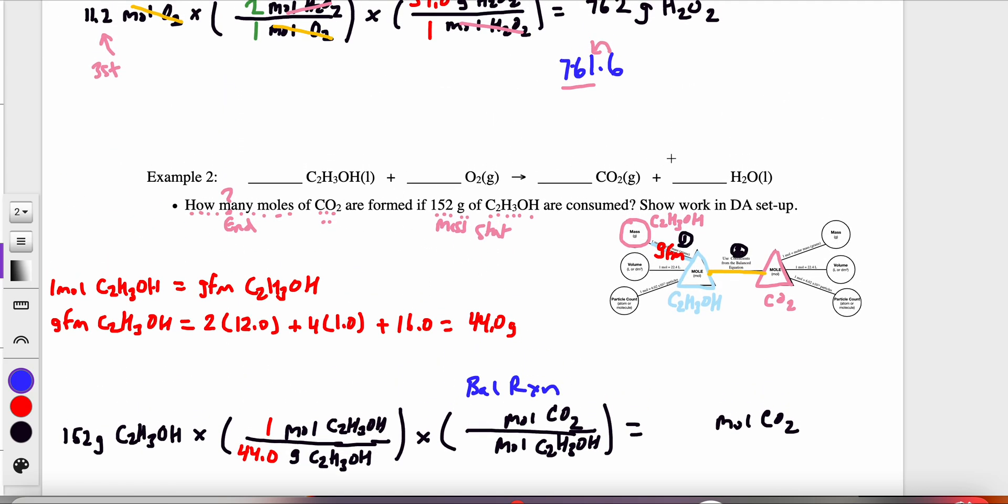And so when you go to balance this reaction, this one is a little bit tricky. It might take you some time, but the C2H3OH needs a coefficient of 2, which makes my carbon count 4 on the left. I only have one carbon on the right, so it needs a coefficient of 4.